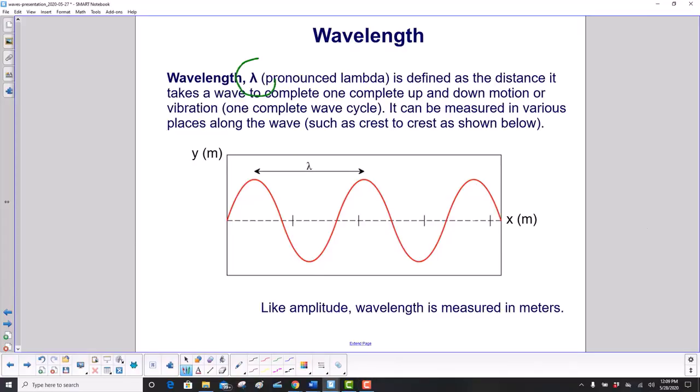Wavelength, which is written like this—that's the Greek letter lambda—is defined as the distance it takes a wave to complete one complete up and down motion, or vibration, otherwise known as one complete wave cycle. It can be measured in various places along the wave, such as crest to crest as shown below.